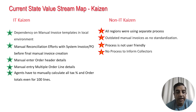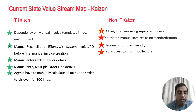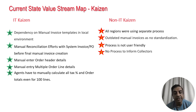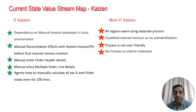The IT kaizens identified included: dependency on manual invoice templates in the local environment, manual reconciliation efforts with the system invoice or PO before final manual invoice creation, manually entering order header details, manual entry of multiple order line details, and agents having to manually calculate all tax percentages and order totals even for 100 lines. These were all identified as IT kaizens requiring automation.